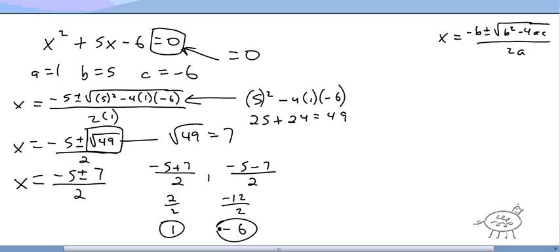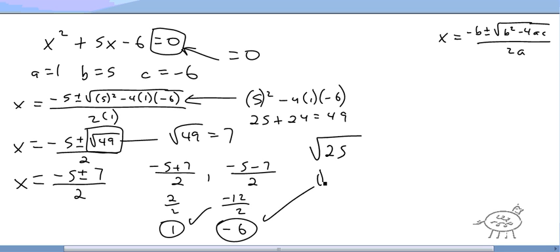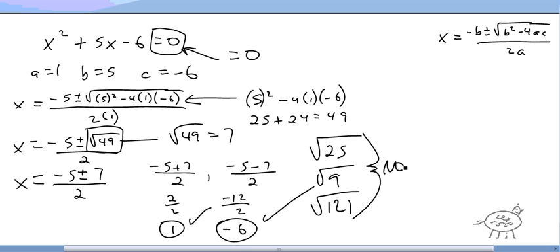If I want to test it, I can put 1 back in: 1 squared is 1, plus 5 is 6, minus 6 is 0. That works. Negative 6 squared is positive 36, minus 30 is 6, and 6 minus 6 is 0. These both work. That's all you do — plug it into the quadratic formula and come up with an answer. If the discriminant is a perfect square like 49, 25, 9, or 121, your answers will be exact with no decimals.